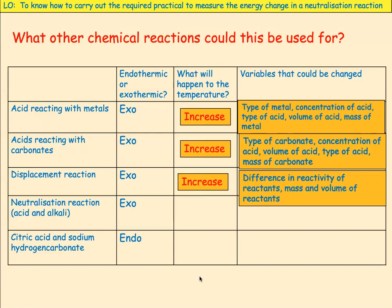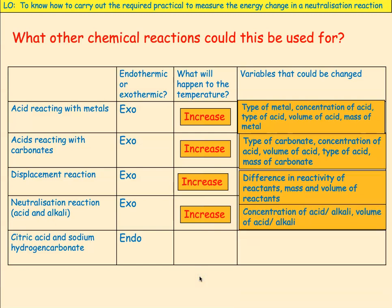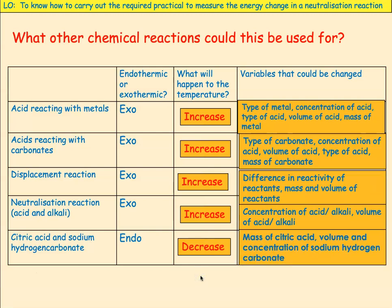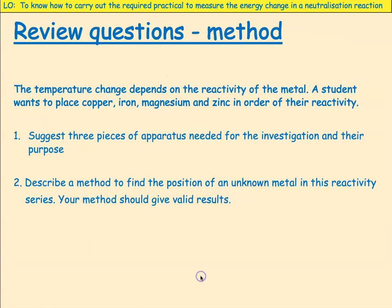You could do a different neutralisation reaction — it doesn't have to be sodium hydroxide and hydrochloric acid. You could use potassium hydroxide and sulfuric acid — again exothermic, so increasing in temperature. You could also do an endothermic reaction, such as citric acid and sodium hydrogen carbonate. In that case you'd expect a decrease, and when it stops decreasing, that marks the end of the reaction. You could change the mass of citric acid, the volume, or the concentration of sodium hydrogen carbonate.